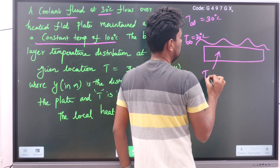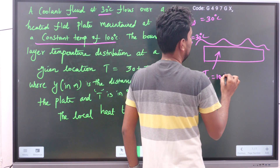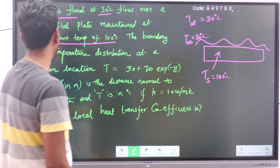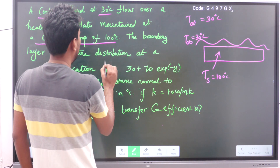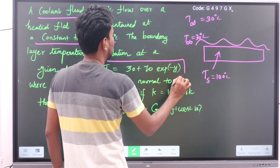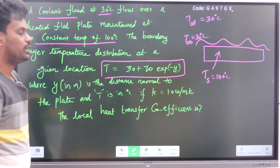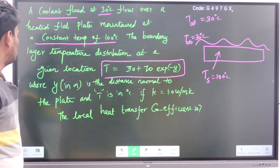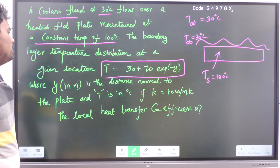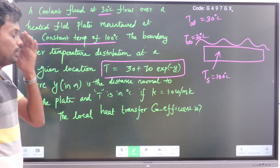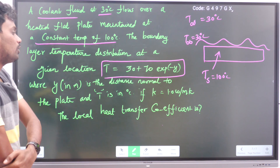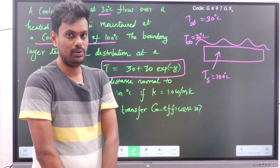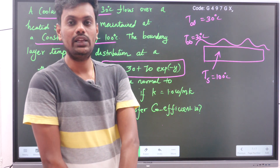The plate is maintained at a constant temperature of 100 degree Celsius, so the surface temperature T_s is 100 degree Celsius. The boundary layer temperature distribution at a given location is: T = 30 + 70·e^(−y), where y in meters is the distance normal to the plate and T is in degree Celsius. If k = 1 W/m·K, the local heat transfer coefficient is to be found.